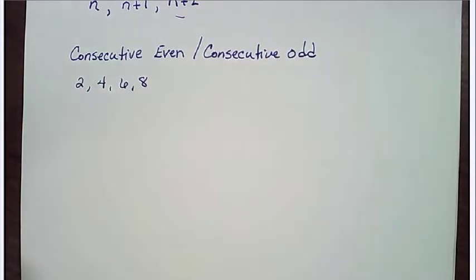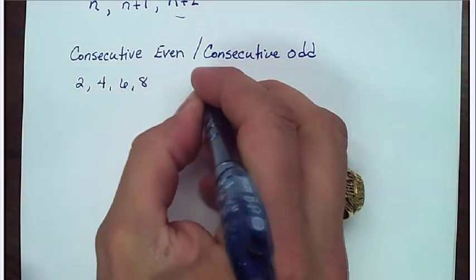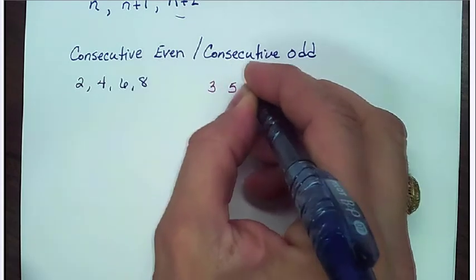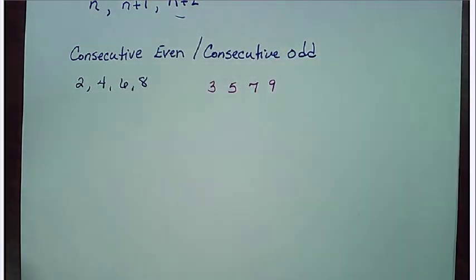Consecutive odd is the exact same way. So consecutive odd are going to be things like 3, 5, 7, 9, 11, 13, etc.